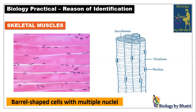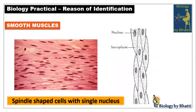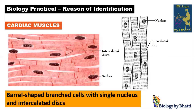You get half a mark for identifying the slide and half a mark for the reason of identification. So the skeletal muscle slide is in front of you. Next we have smooth muscles. On the left side are the microscope views — they are barrel-shaped. On the right side, those muscles are also barrel-shaped but they are branched, have a single nucleus, and you can clearly see intercalated discs.